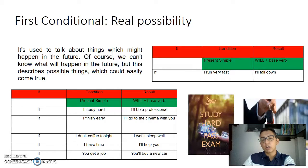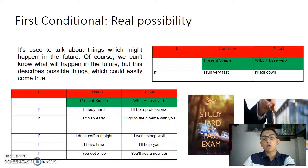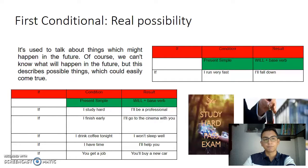For example: if I run very fast, I will fall down. If I study hard, I will be a professional. If I finish early, I will go to the cinema with you. If I drink coffee tonight, I won't sleep well. If I had time, I will help you. If you get a job, you will buy a new car.